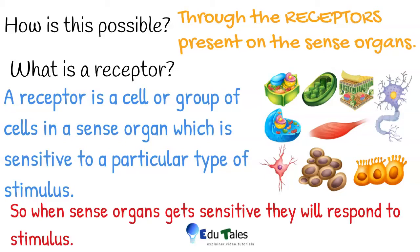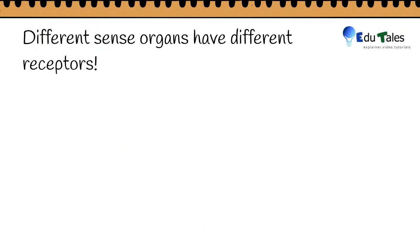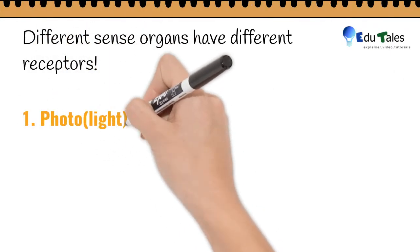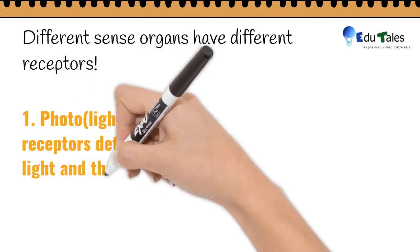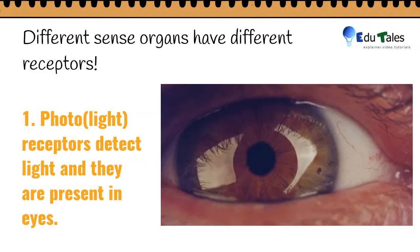Photo, that is light receptors, detect light and they are present in eyes. Taste receptors detect taste and they are present in tongue.